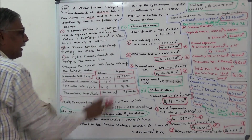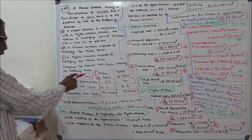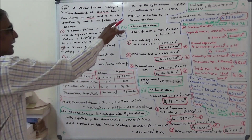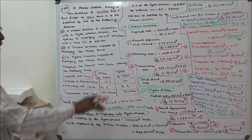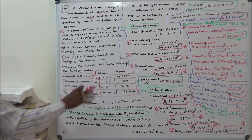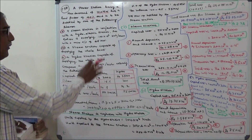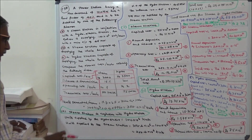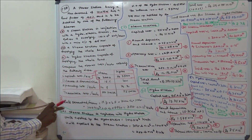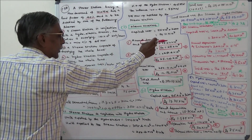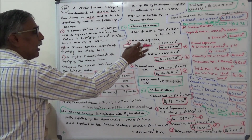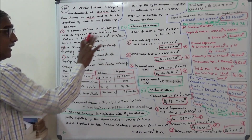For the steam station: capital cost per kilowatt is rupees 2000, steam station capacity is 55 megawatts. So capital cost is 55 into 10 power 3 into 2000 equals rupees 11 crores. Annual interest and depreciation is 15%, so 0.15 into 11 crores equals rupees 1.65 crores.